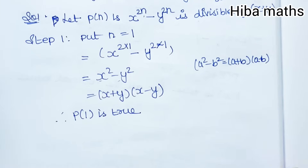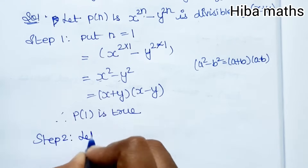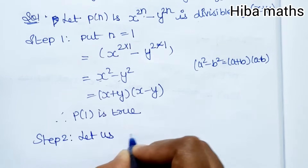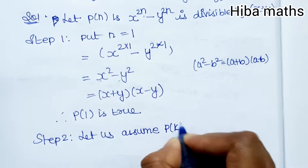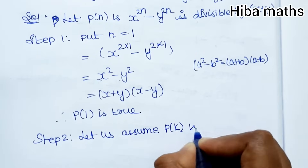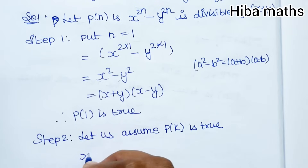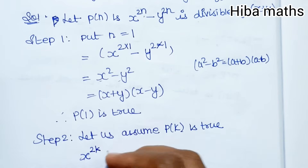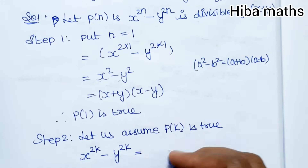Step 2. Let us assume P(k) is true. The statement is: x^(2k) - y^(2k) is divisible by x plus y.